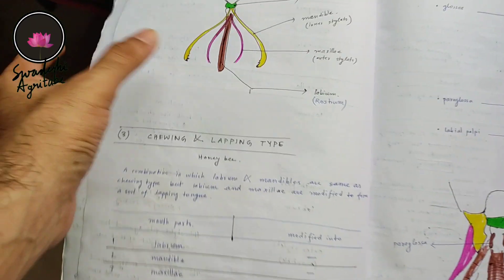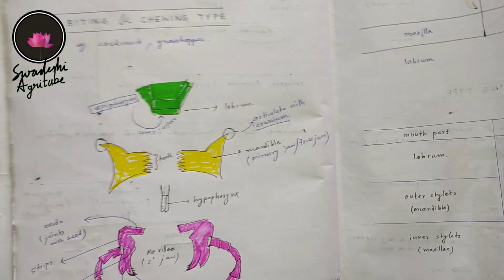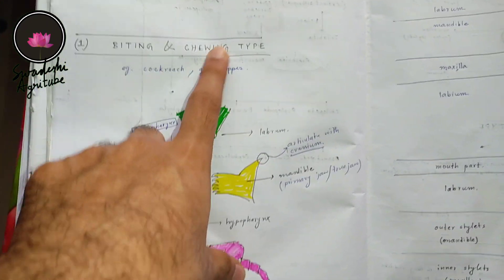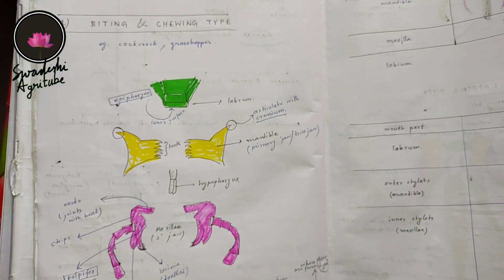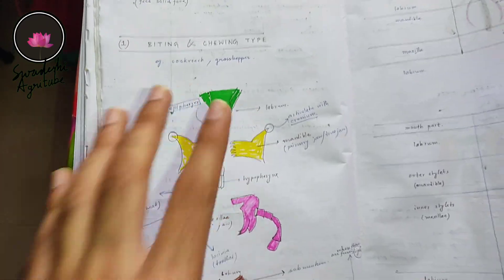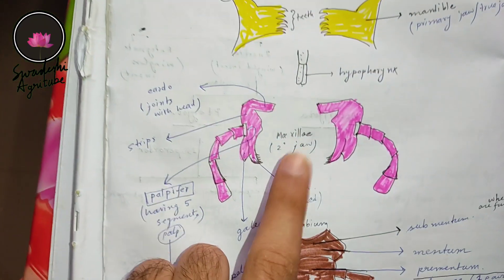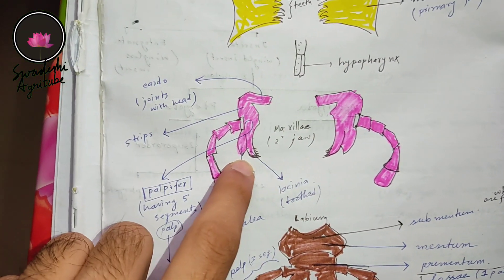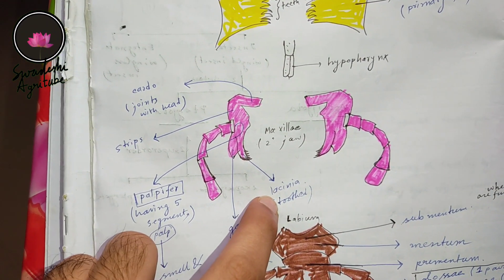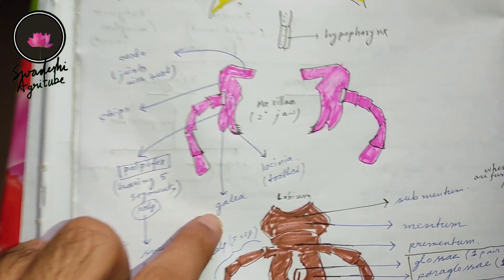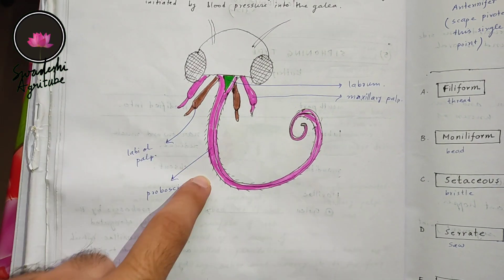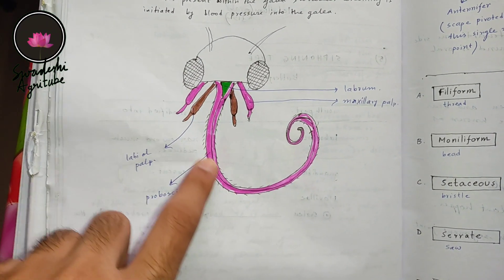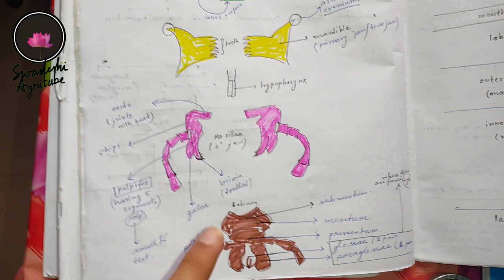I have drawn different types of pictures so that you can understand it easily. The fact is that if you know the biting and chewing type mouthparts in detail, you can easily remember all the other types — piercing and sucking, chewing and lapping, sponging, and siphoning. For example, the maxilla has an inner teeth portion called lacinia and an outer portion called galea. In siphoning type mouthparts, that same galea has changed into a proboscis-like structure.